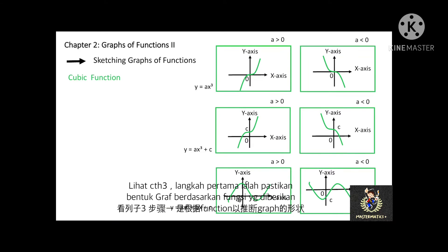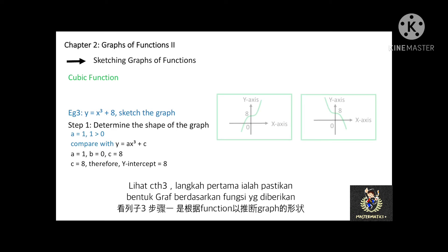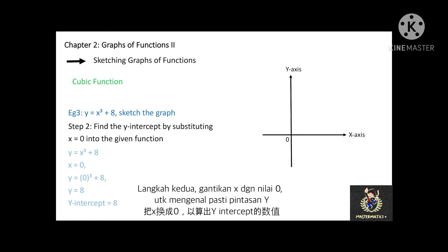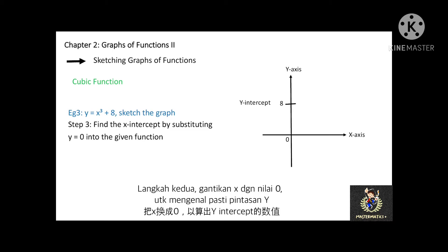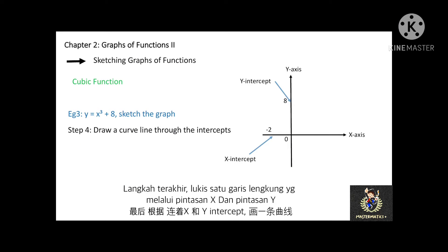Let's see an example of a cubic function graph. The equation is y = x³ + 8. Since a = 1 and is greater than 0, the cubic curve will end in a going-up position. Comparing with y = ax³ + bx + c, we find c = 8, so the y-intercept is at (0, 8). We can also find the y-intercept by substituting x = 0 into y = x³ + 8 to get the same answer. Then, finding the x-intercept by substituting y = 0 gives x = negative 2. Lastly, draw a cubic curve through the x and y-intercepts.